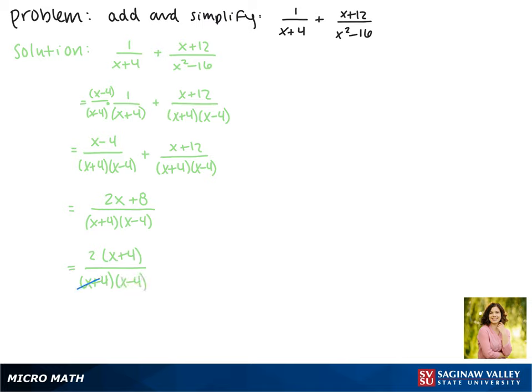Now we can start to cancel out factors. We see that we have a factor of x plus 4 on the top and bottom, so our final answer is 2 over x minus 4.